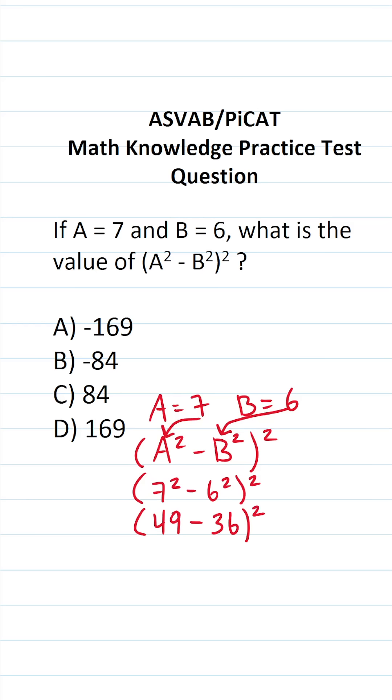This is all squared. If you can't do 49 minus 36 mentally, do it off to the side. Again, you will have scratch paper on test day. 9 minus 6 is 3. 4 minus 3 is 1. So this becomes 13 squared.